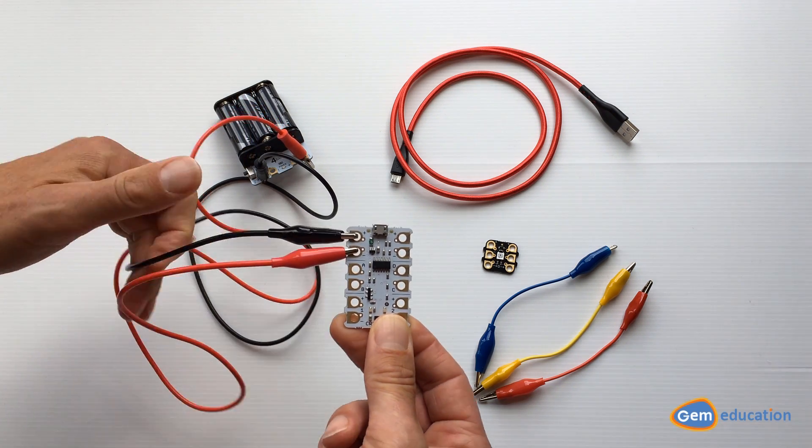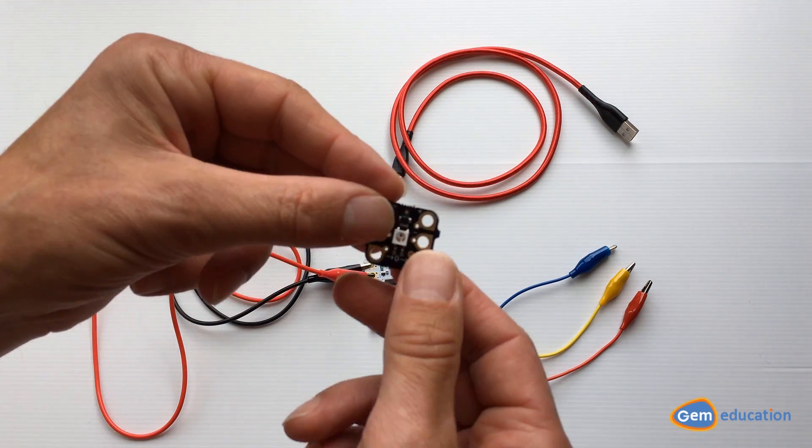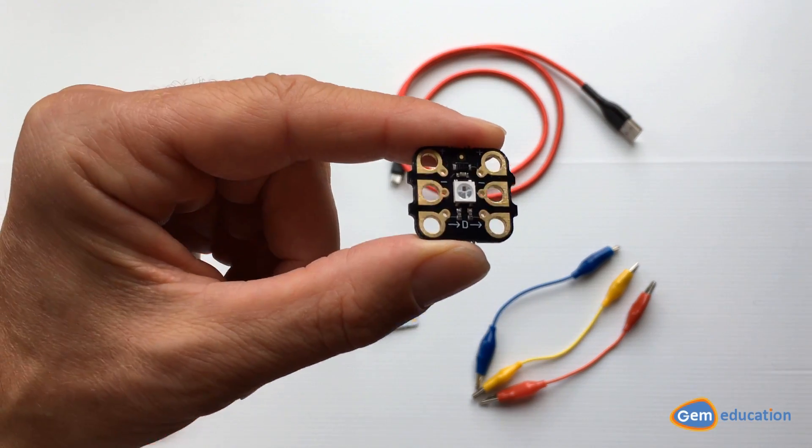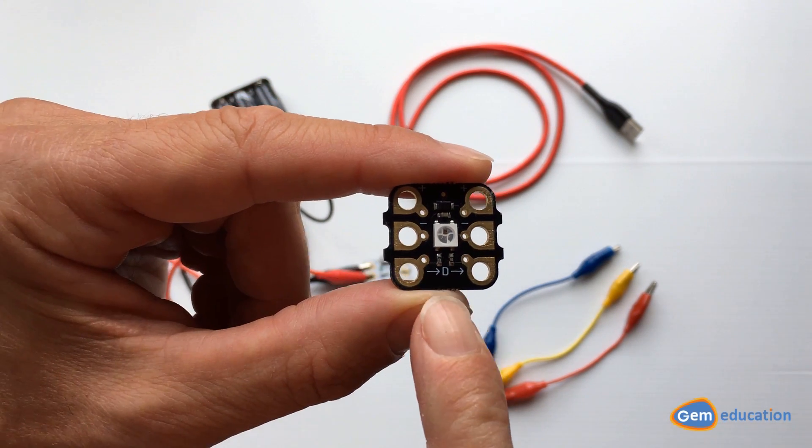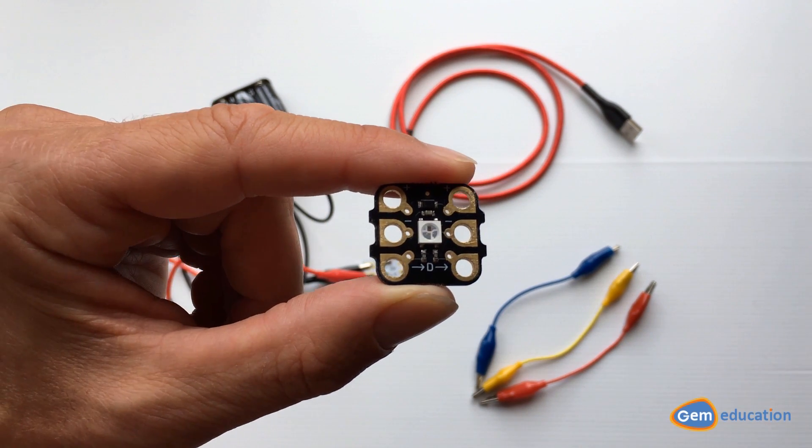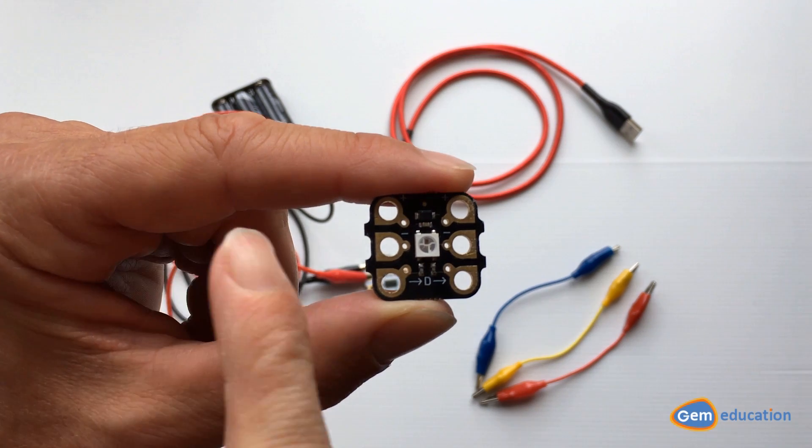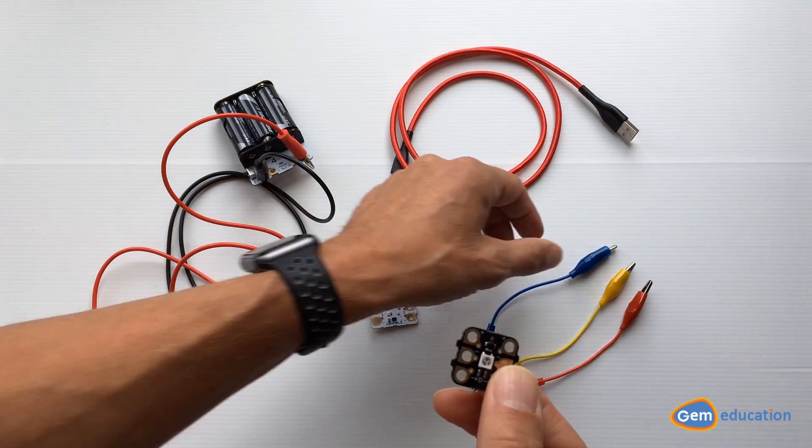On your sparkle, there is a front and a back. On the front, you should see the letter D. We need to make sure when attaching our sparkle that the leads come into the sparkle on the left side.